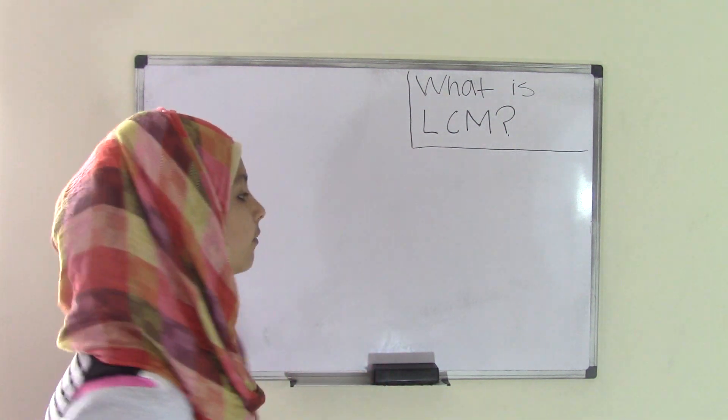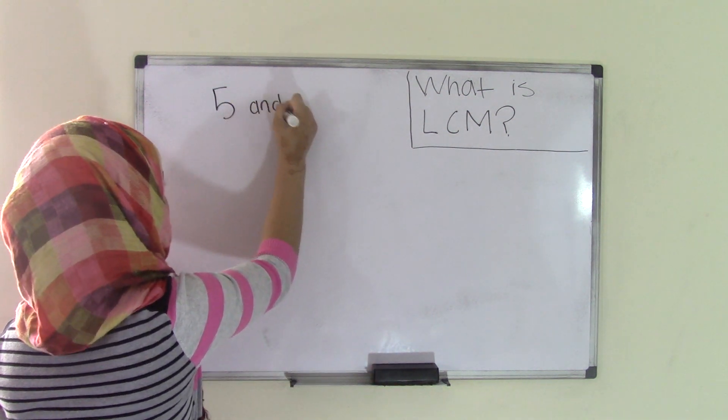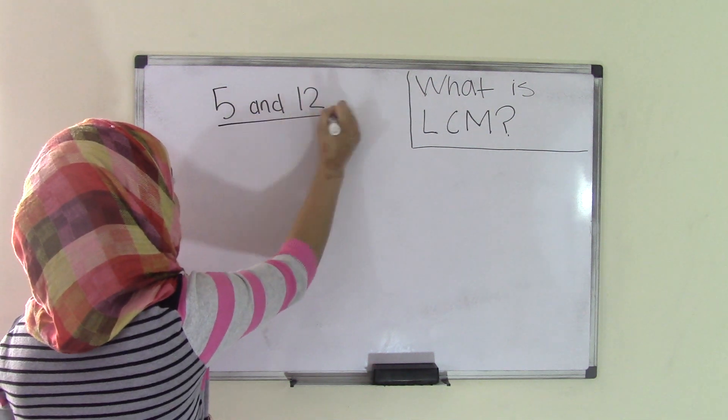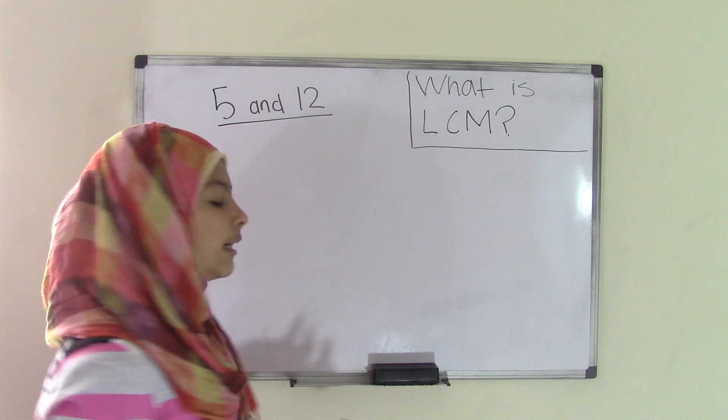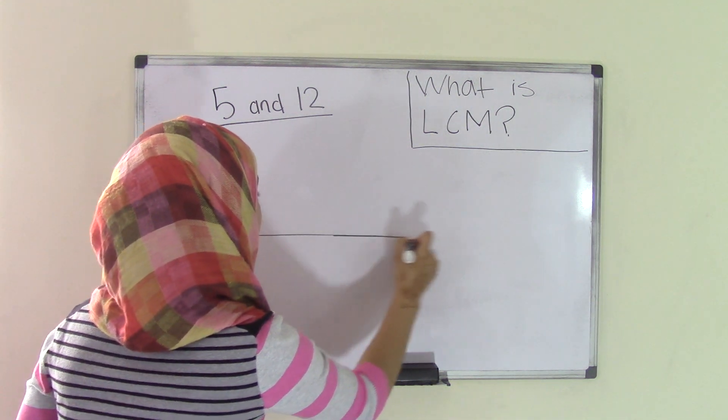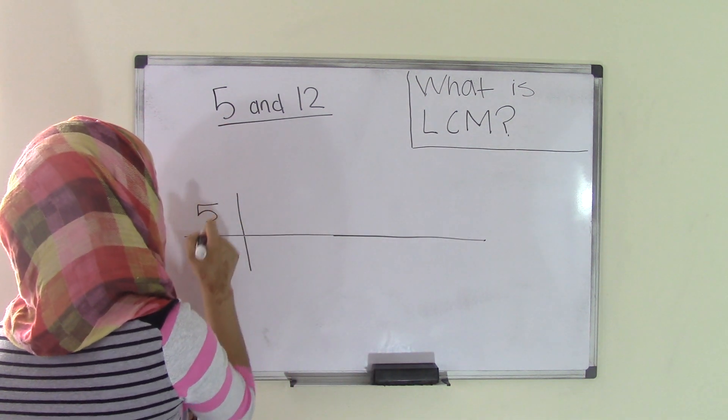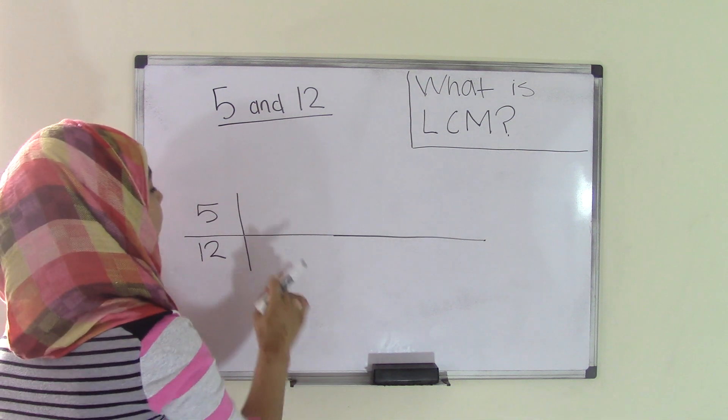So for instance, let's say we have the two numbers 5 and 12, and you need to find the least common multiple for both of these numbers. You will do that by making a diagram, or also a table you could call it, like this. And you're going to list 5 over here and 12 over here, and you're going to list each of the multiples for both of these.